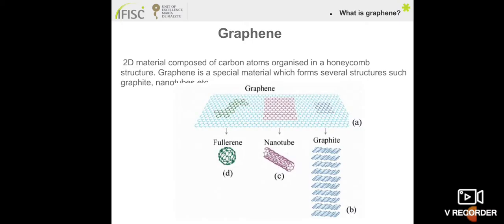I want to answer the question: what is graphene? Graphene is a wonder material that will lead our future technologies. It was discovered in 2004 by the two scientists Geim and Novoselov by the method of Scotch tape. Graphene is a 2D material composed of carbon atoms organized in a hexagonal structure. This material forms several structures: it can be wrapped up in zero dimensions like in fullerene, rolled in 1D like in a nanotube, or stacked in 3D like in graphite.